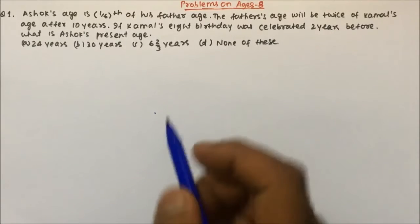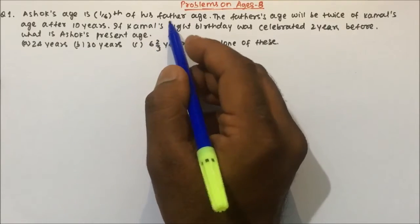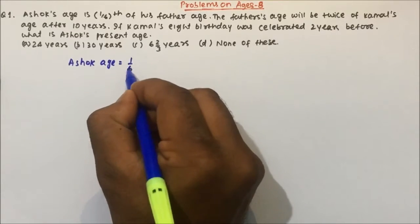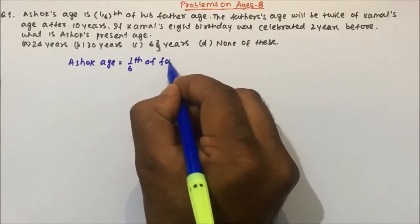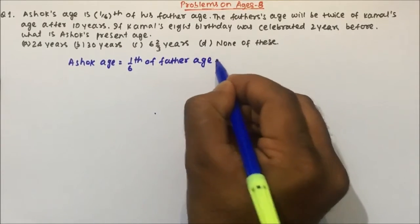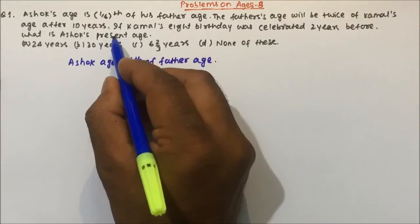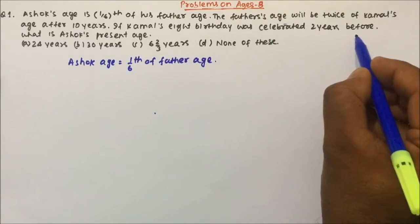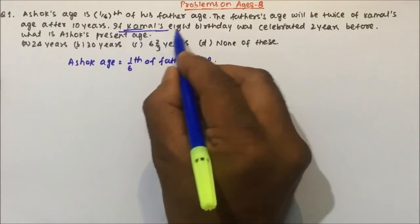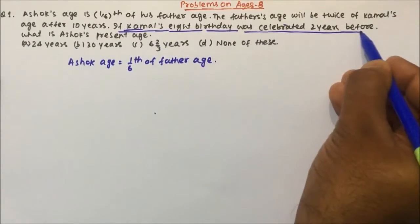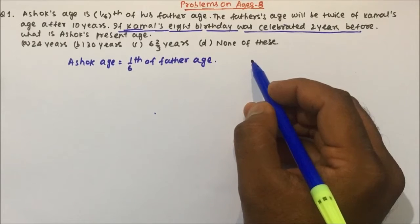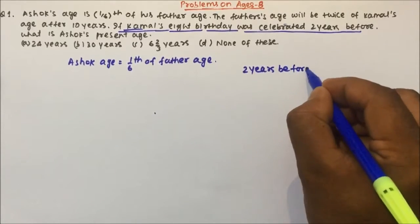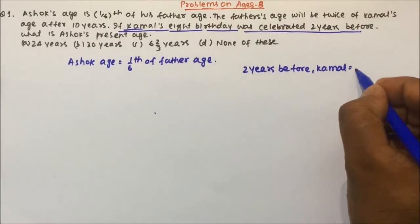Let's understand the question and try to solve it. Ashok's age is one-sixth of his father's age. Now, the father's age will be twice Kamal's age after ten years. If Kamal's eighth birthday was celebrated two years before — this point is very important. From here we can get Kamal's age. Since the eighth birthday was celebrated two years before, Kamal was eight years old two years ago.